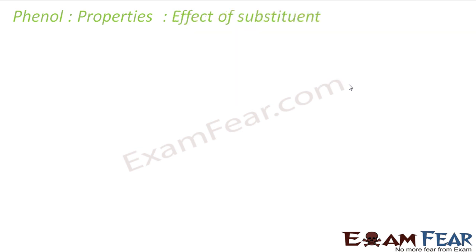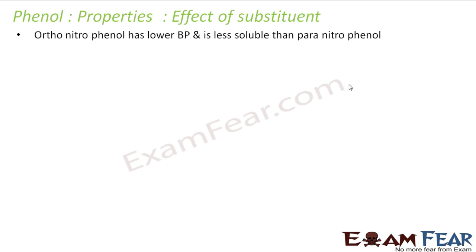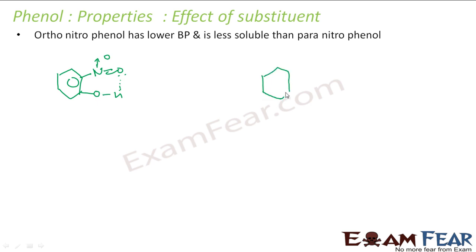Now we'll talk about the effect of substituents on phenol properties and intramolecular forces. Orthonitrophenol has lower boiling point and is less soluble than paranitrophenol. Let's draw orthonitrophenol. In orthonitrophenol, there is an intramolecular hydrogen bond between the OH and the nitro group.